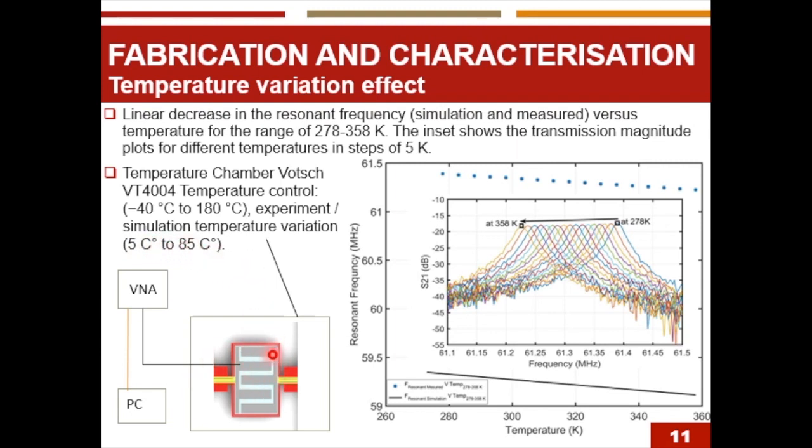So here from the figure, we can see there is a linear decrease in the resonant frequency simulation and measured versus the temperature over the range of 278 to 358 Kelvin. And the inset shows the transmission magnitude plot for different temperatures in steps of 5 Kelvin.